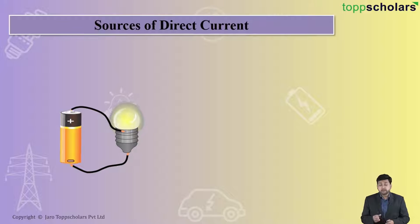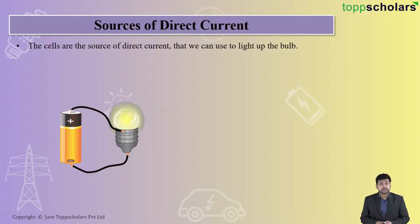As the wire is connected to the battery, the bulb glows. When it is disconnected, the glowing of the bulb stops. So basically what happens? The cells are the sources of direct current. We can use them for lighting up the bulb.